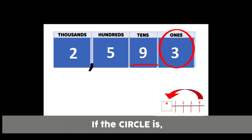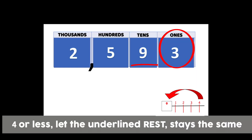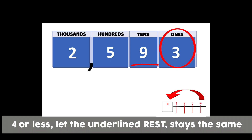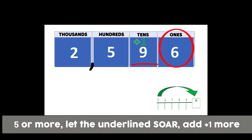If the circle is four or less, let the underline rest — stays the same. Five or more, let the underline soar — add one more. Four or less, let the underline rest — stays the same. Five or more, let the underline soar — add one more.